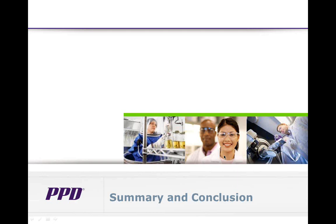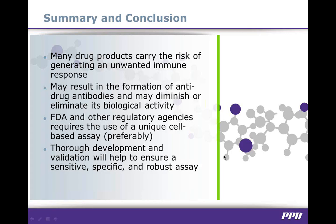Assay transfer can be costly and time-consuming, making it vital for the sponsor to choose a reputable contract laboratory with state-of-the-art instrumentation and qualified personnel who can minimize the inherent learning curve. To summarize and conclude: as the use of therapeutic proteins increases, the risk of immunogenicity and the formation of neutralizing antibodies increases as well. Cell-based assays are well suited for detecting NABs because they mimic the mechanism by which NABs and the drug interact in vivo. Each NAB assay is unique and complex, and a careful and thorough assessment and validation of multiple factors — including reagents, assay controls, matrix interference, and other conditions — will help to ensure a sensitive, specific, and robust assay. That concludes my coverage of the cell-based NAB assay and I will now turn the floor over to questions.